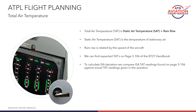The temperature increase associated with high-speed flight is called RAM rise, and it's a result of heating of the air due to compression. From a practical standpoint, TAT is the temperature of the airplane's skin, while SAT or OAT is the free air temperature. Total air temperature is always greater than SAT due to the RAM rise in temperature that occurs because of this dynamic heating.